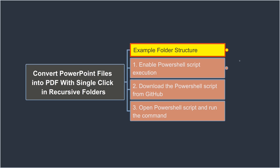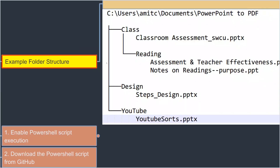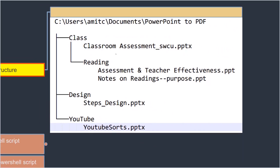So here is a quick example. Let's say you have a folder and inside there are multiple folders. For me, I have a class folder, a design folder, a YouTube folder, and then there's even a subfolder. Each one has one or two PowerPoint files. Some of them have a PPTX extension and some are in the older PPT format. This script should be able to convert all of them into PDF simultaneously.